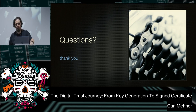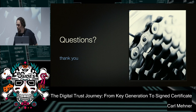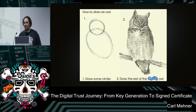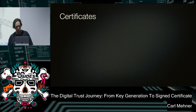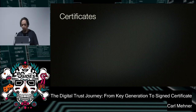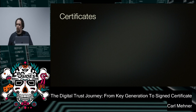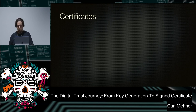Can you expand a little bit on what happens in steps one and two? Okay, I can do that. So I realize it's about trying to teach you how to draw an owl. So maybe we need to get a little bit further in the weeds. Certificates are basically just a way to cryptographically bind an identity to a cryptographic key. So you take an ID, a key, and you bind them together.